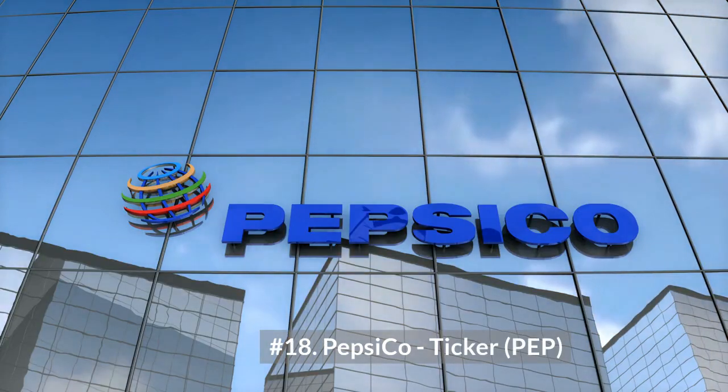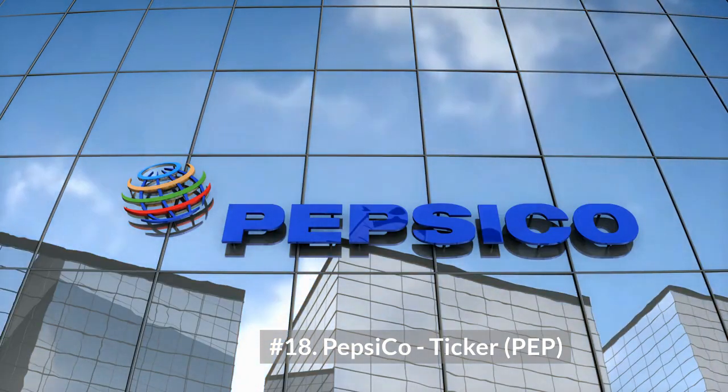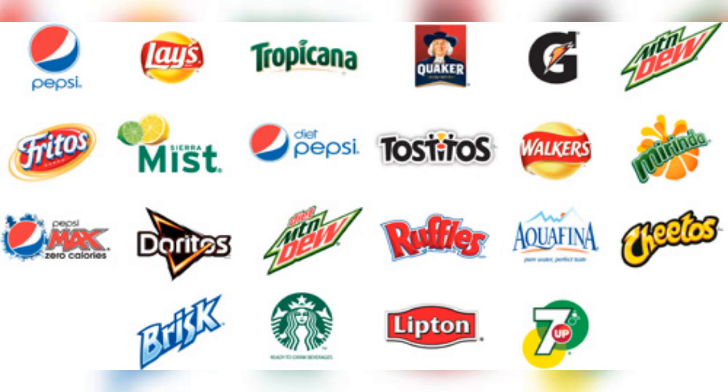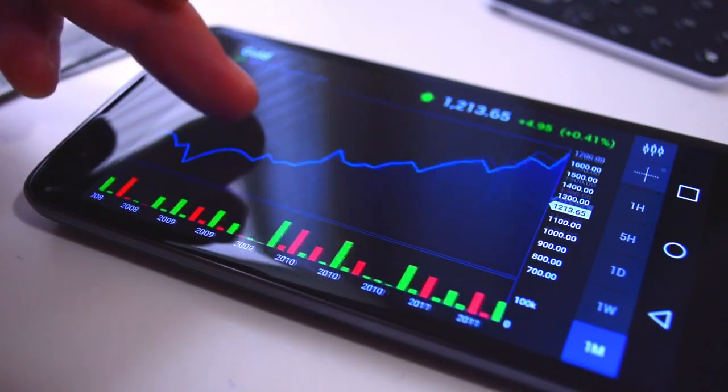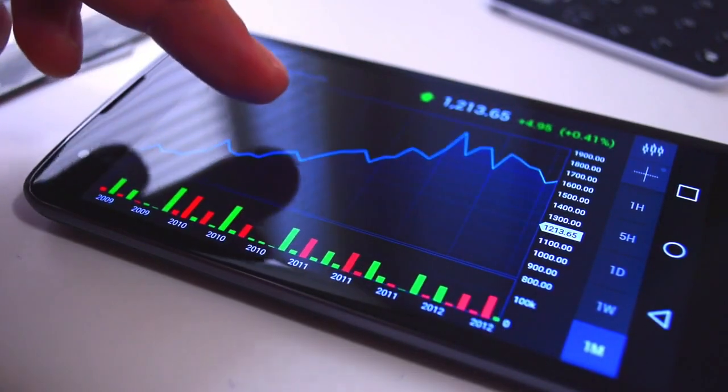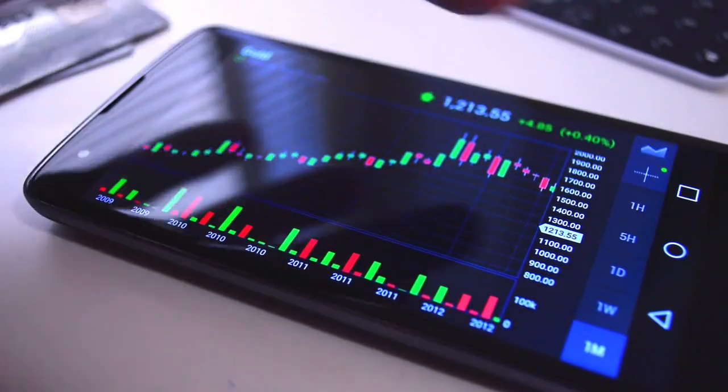Number 18, PepsiCo, ticker PEP. Pepsi goes head-to-head with Coca-Cola in pursuit of soft drink sales, but this company has so much more product diversity because of its snack food business. This includes products like Lay's chips, Doritos, and Fritos. Pepsi has been using its excess cash flow to pay dividends every quarter since 1965 and increasing the dividend rate per share annually since 1973.